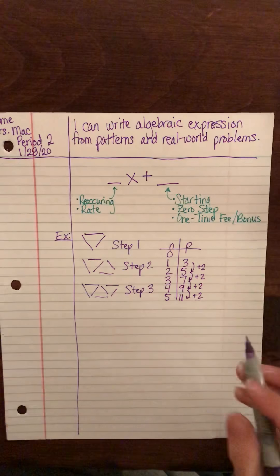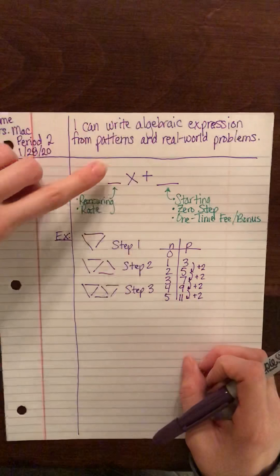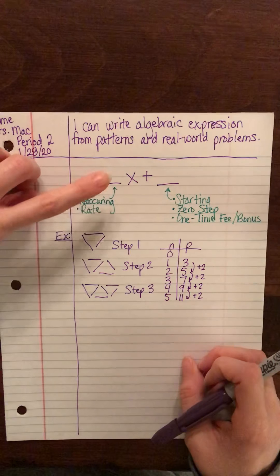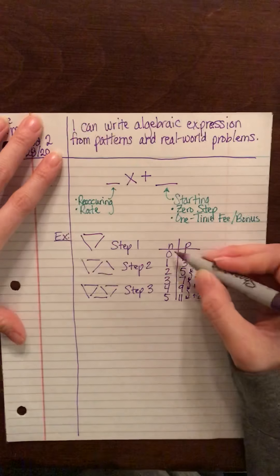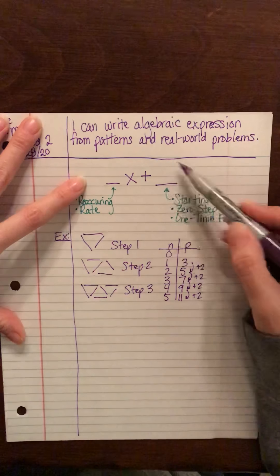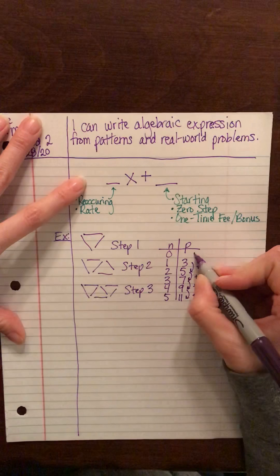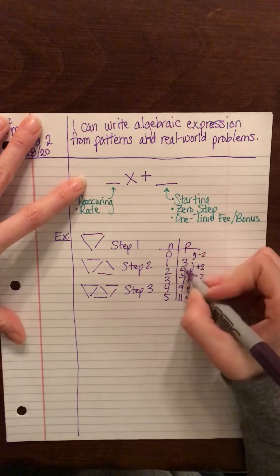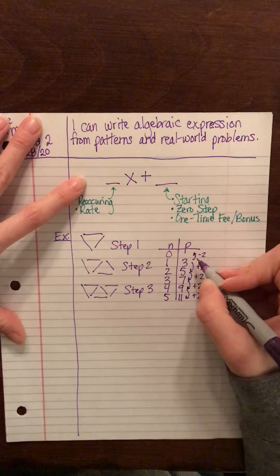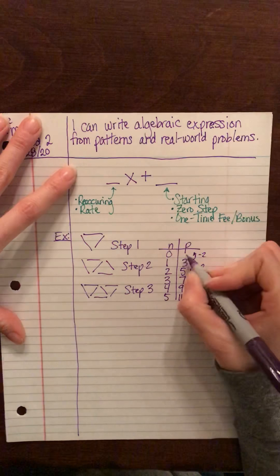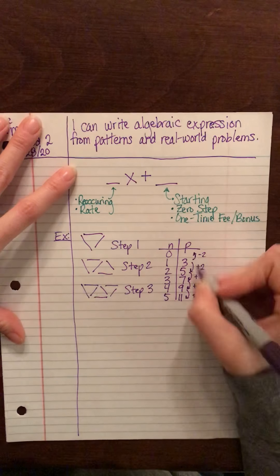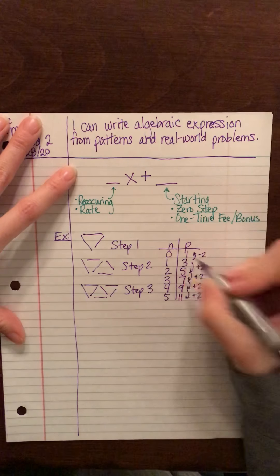So what that means is that two is our reoccurring amount, our rate. Now to find our starting place, we need to go backwards and subtract two to find out what would be the number of sticks at the zero step. And if we use the rule that we're given, it'll be one.